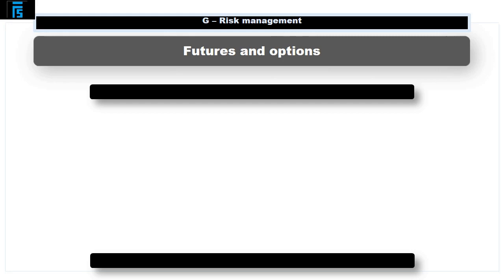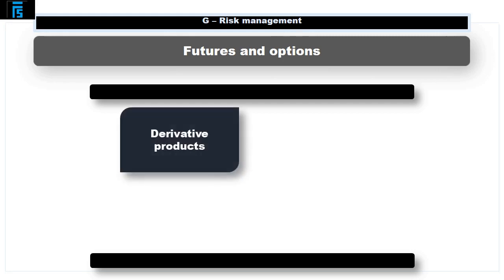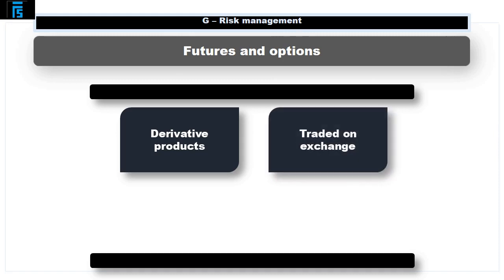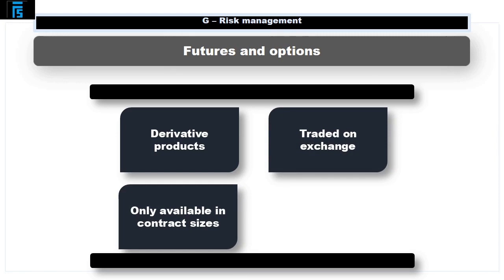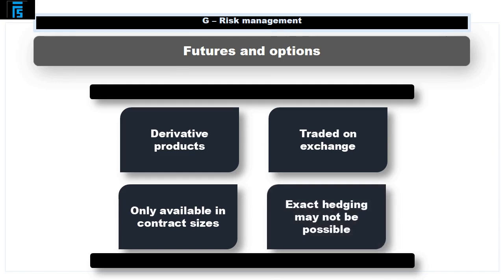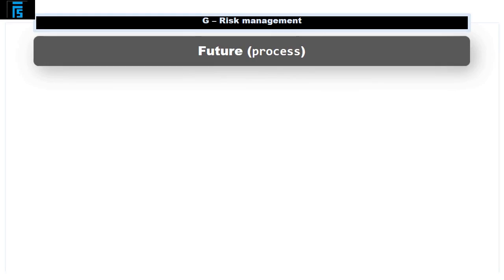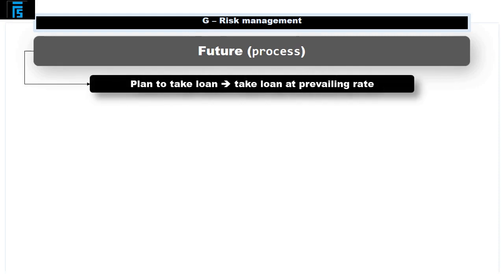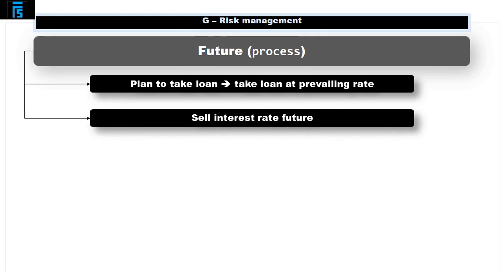Futures and options. Futures and options are derivative products and they work in a very similar way to that described in the exchange rate risk presentation. A future is exchange traded, which means it is only available in set contract sizes, for example blocks of £500,000, and so it may not be possible to exactly hedge the loan being taken out. A future is similar to an FRA in that it is separate from the loan it is protecting. A company plans to take out a loan in the future and will take out that loan at the prevailing rate at that time. Separately, the company will sell interest rate futures, i.e. a commitment to pay interest in the future.